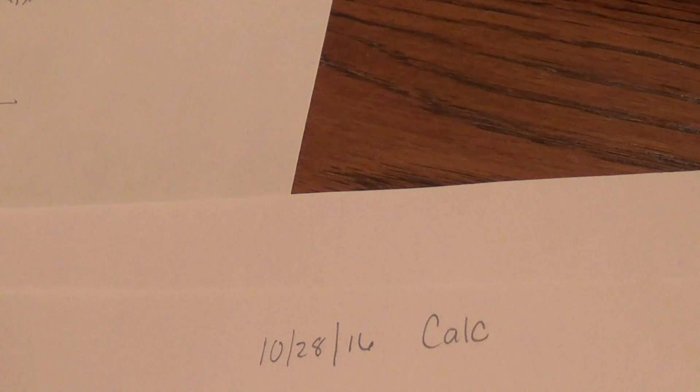So we're going to look at related rates again, and I'm going to train you a little bit more on the details. It turns out that a derivative is a rate of change, so any time you have anything changing, you can express it as a derivative.